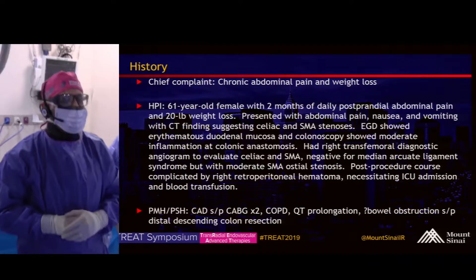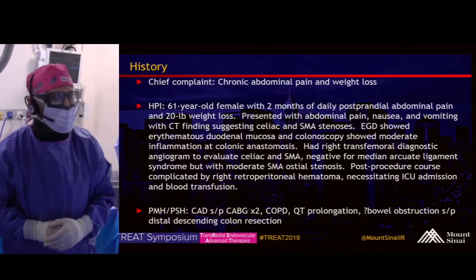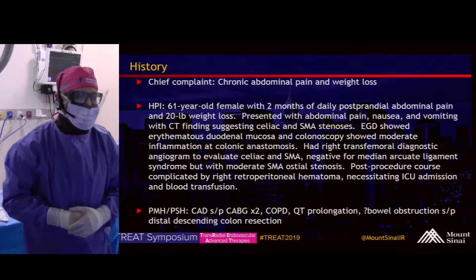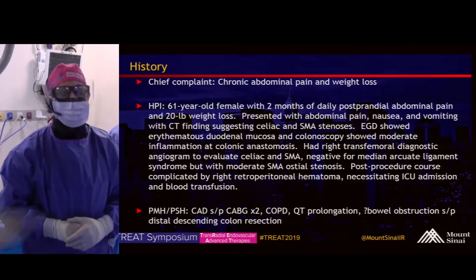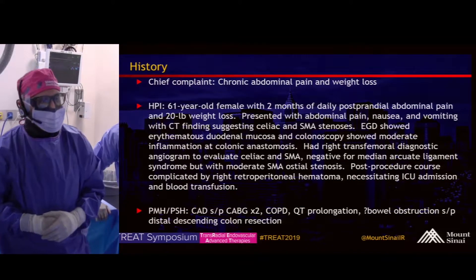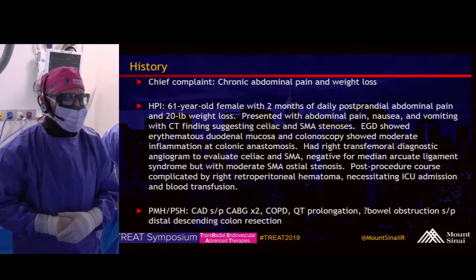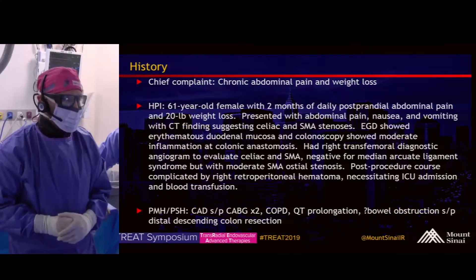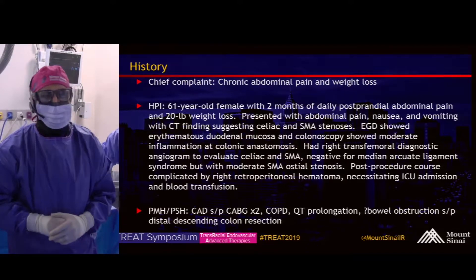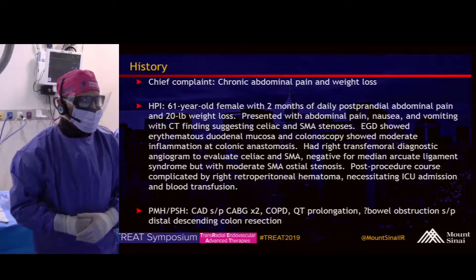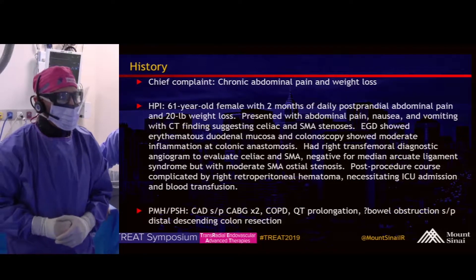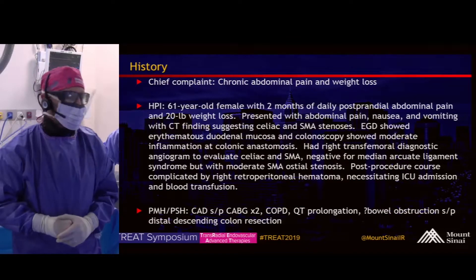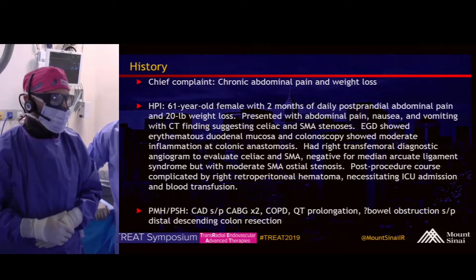She presented with abdominal pain, nausea, and vomiting, with a CT finding suggesting celiac and SMA stenosis. EGD showed erythematous duodenal mucosa, and colonoscopy showed moderate inflammation at the colonic anastomosis. She had a right transfemoral diagnostic angiogram to evaluate the celiac and SMA, which were negative for median arcuate ligament syndrome but showed moderate SMA osteo-stenosis. The post-procedure course was complicated by access-site retroperitoneal hematoma necessitating ICU admission and blood transfusion, though no intervention was needed.